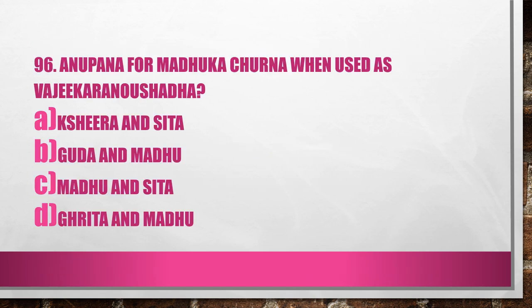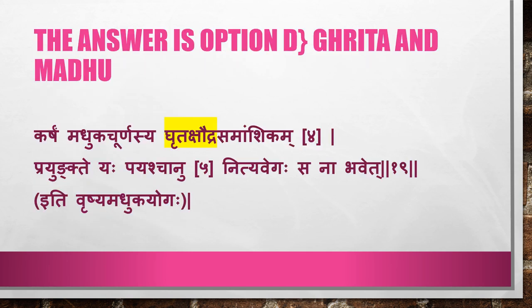Question 96. Anipana for Madhukachurna when used as Vajikarana: A. Sheera Siddha, B. Gudan Madhu, C. Madhu and Siddha, D. Krudan Madhu. The answer is Option D, Krudan Madhu. From the verse: Karisham Madhukachurnasya Krudakshaudra Samamshikam Prayungteyah Payashjanu Nithyavekah — it is Vrishya Madhukayoga. Krudakshaudra means Krudan and Madhu.